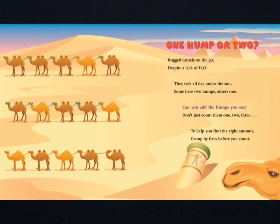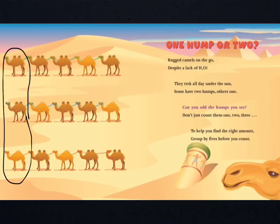So, we can put these camels into groups to help us make it easier to count the humps. In this group I see I have 2 humps, 2 humps, and 1 hump — that's 5 humps. Now, you group up the camels into groups of 5 humps. How many total groups of 5 humps are there? What multiplication sentence does this make?